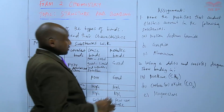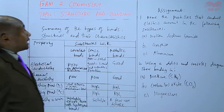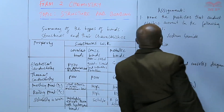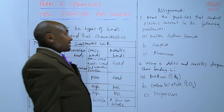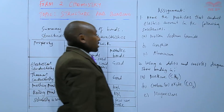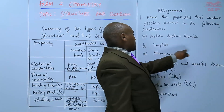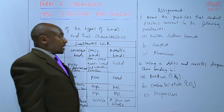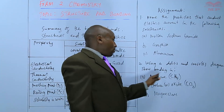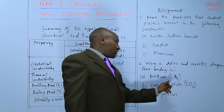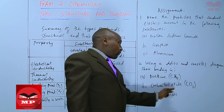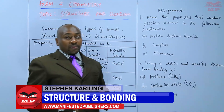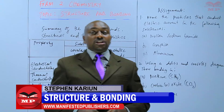For the assignment, question one: name the particles that conduct electric current in the following substances — molten sodium bromide, graphite, and aluminum. Question two: using a dot and cross diagram, show bonding in methane (CH₄), carbon dioxide (CO₂), and magnesium. We'll stop there, and that marks the end of the topic on structure and bonding. We'll meet in another topic — goodbye.